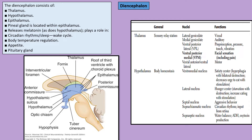The diencephalon is made up of thalamus, hypothalamus, and epithalamus. The epithalamus has the pineal gland, which produces melatonin that controls your sleep-wake cycle. The thalamus is considered a sensory relay station — all sensations pass through the thalamus before reaching the brain cortex. The VPM nucleus transfers facial sensation including pain, which is important to know.